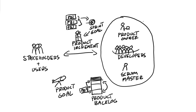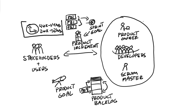The Sprint Review happens towards the end of the sprint, involves the entire Scrum team collaborating with the stakeholders and users, and is time boxed to four hours for a four-week sprint, or two hours for a two-week sprint, and so forth.